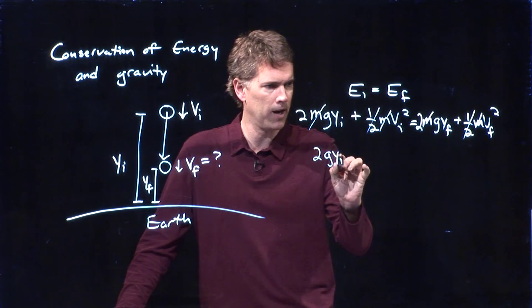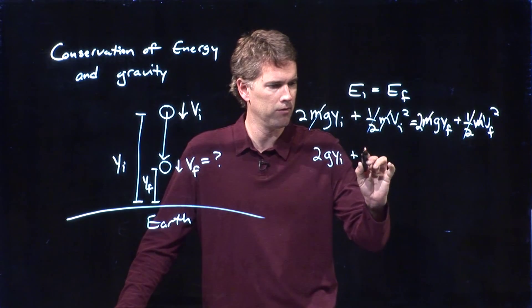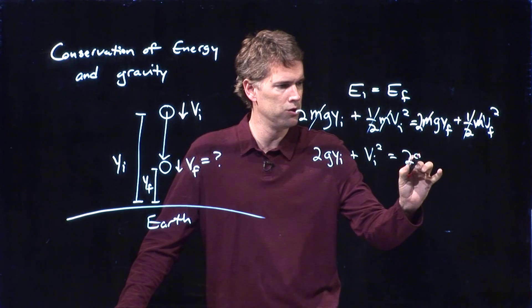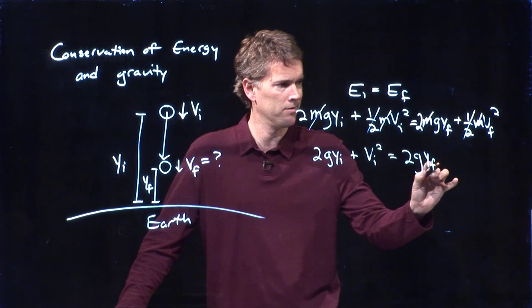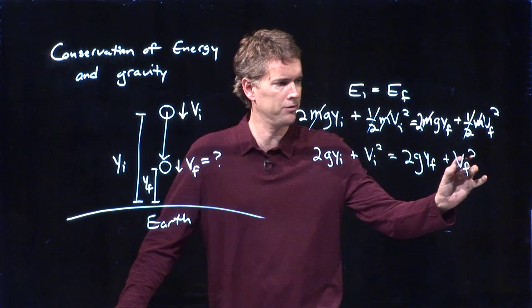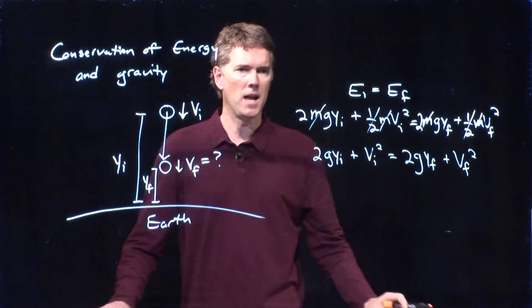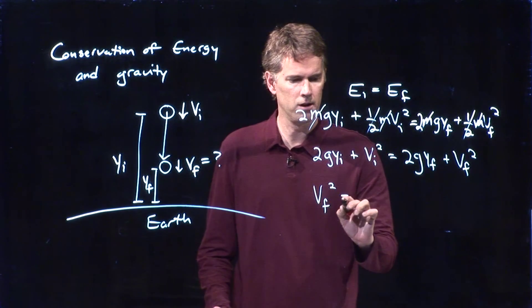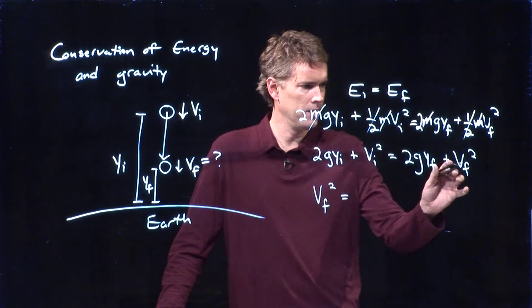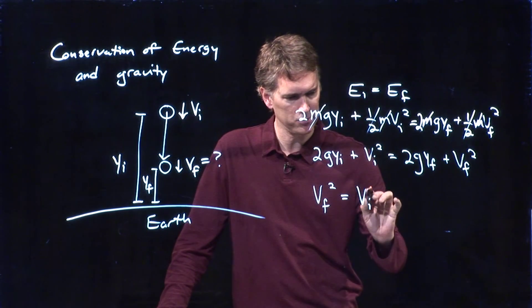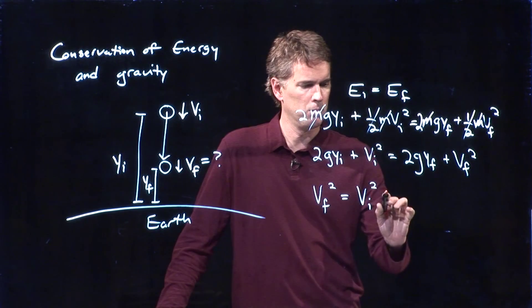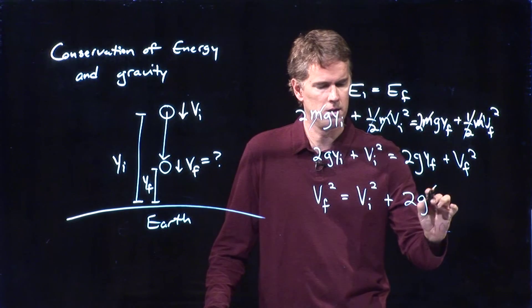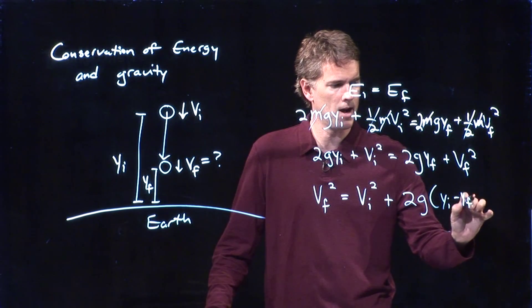And let's just rewrite this line. 2g y sub i plus vi squared equals 2g y sub f plus vf squared. And now let's rearrange some of these terms. Vf squared equals what? Vf squared is going to equal vi squared plus 2g yi minus yf.